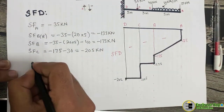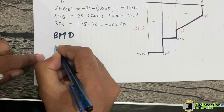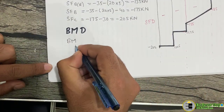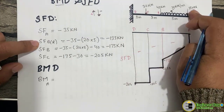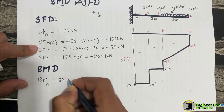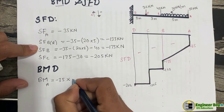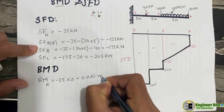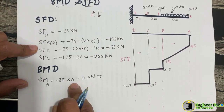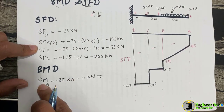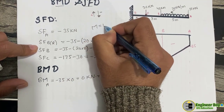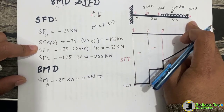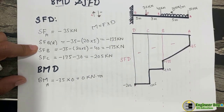Now let's calculate the bending moment at each point to draw the bending moment diagram. At point A, the bending moment is minus 35 times the distance from A to A, which is zero. So the bending moment at point A is zero kilonewton-meters, since moment equals force times perpendicular distance.